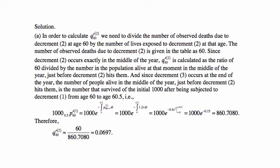For part a, we need to calculate q'₆₀⁽²⁾, the probability of dying from decrement 2 in the associated single decrement table. That's calculated as the number of observed deaths due to decrement 2 at age 60 divided by the number of lives exposed to decrement 2 at that age. The number of observed deaths due to decrement 2 is given in the table as 60.